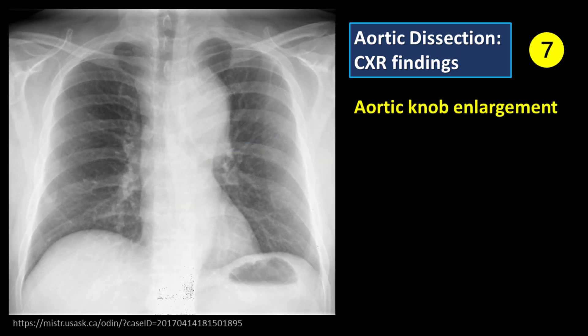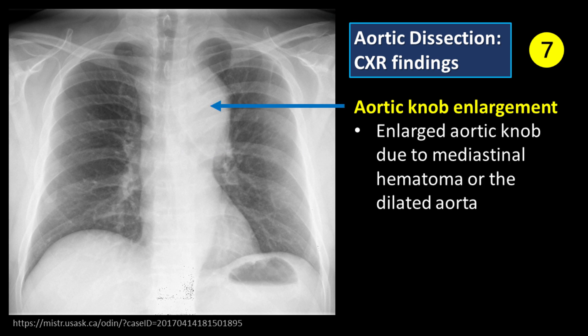Feature number 7: Aortic knob enlargement. The enlarged aortic knob may be due to mediastinal hematoma or the dilated aorta.